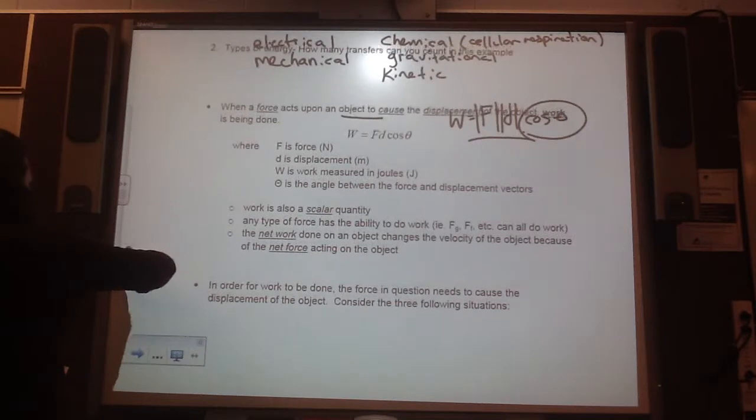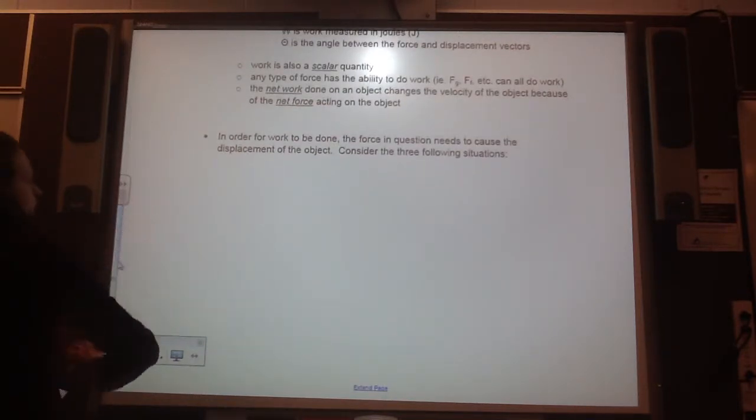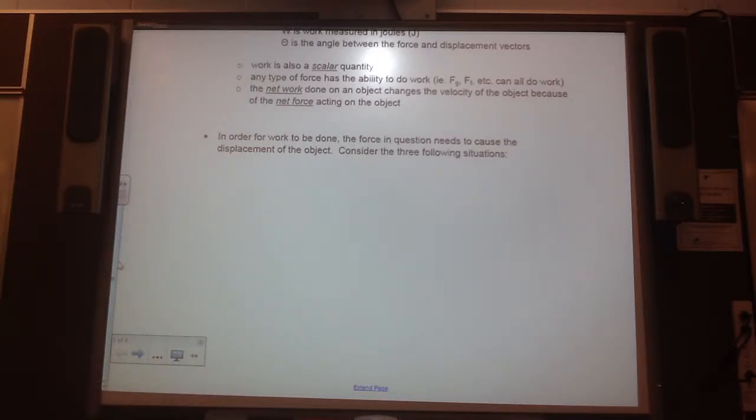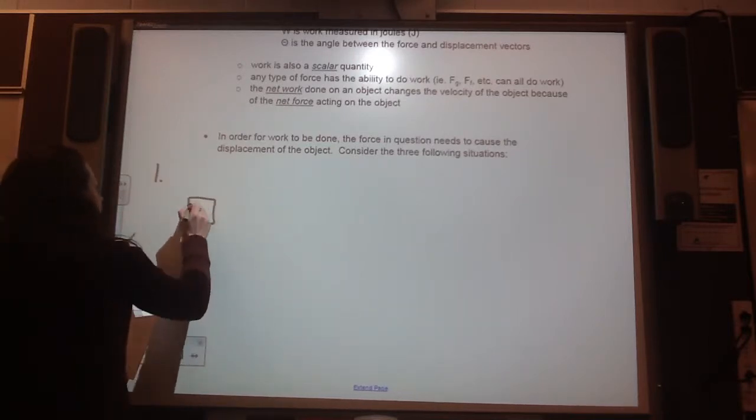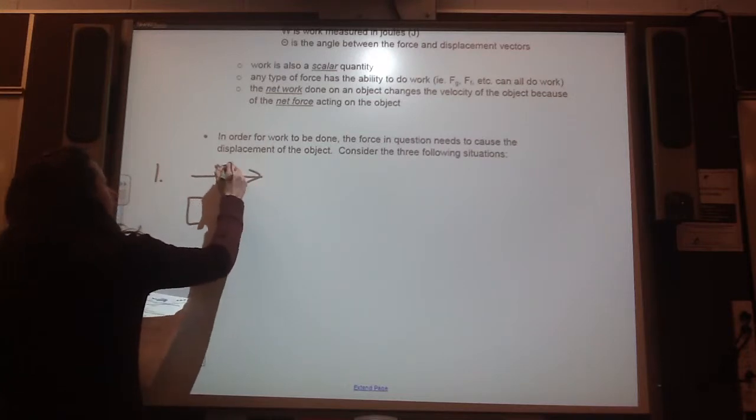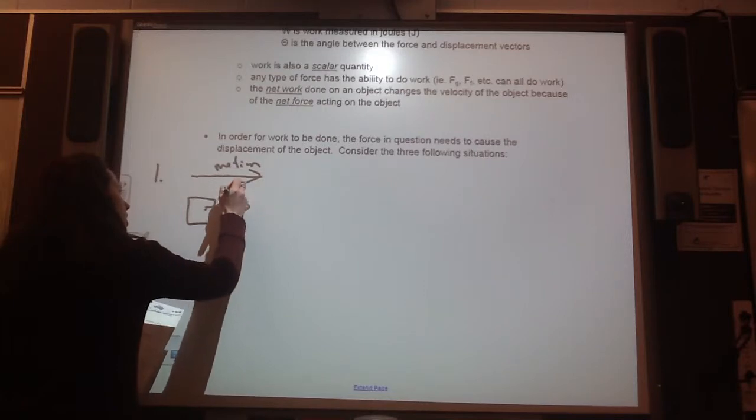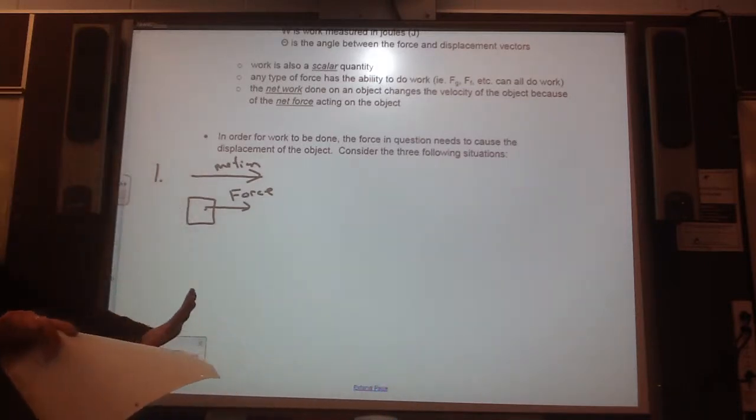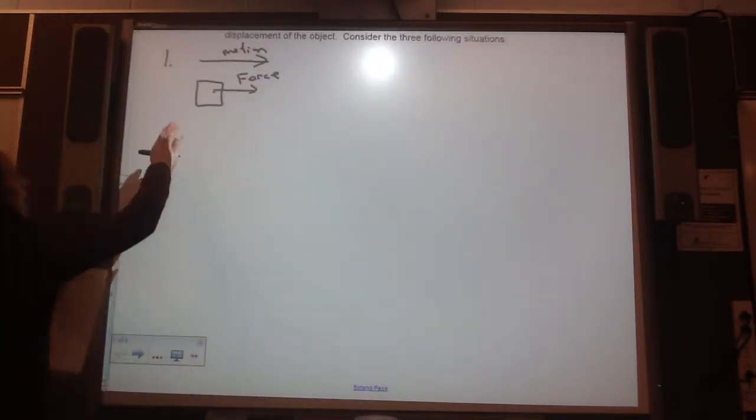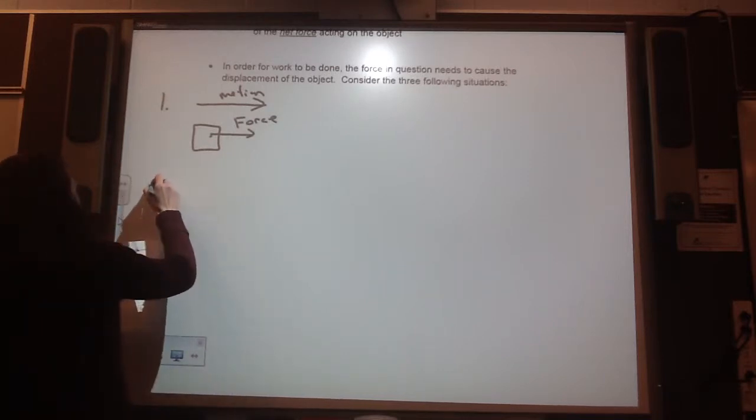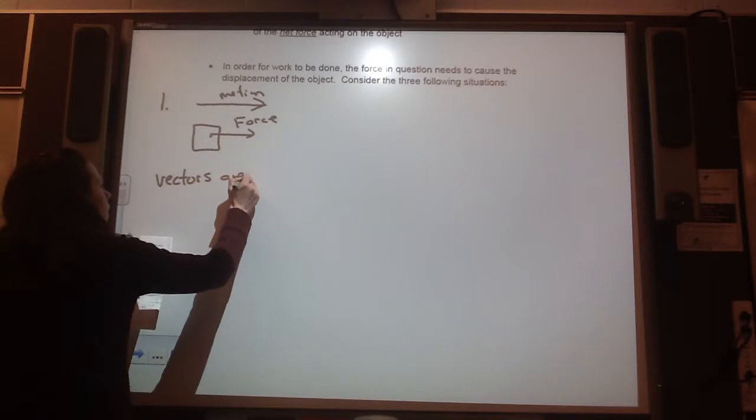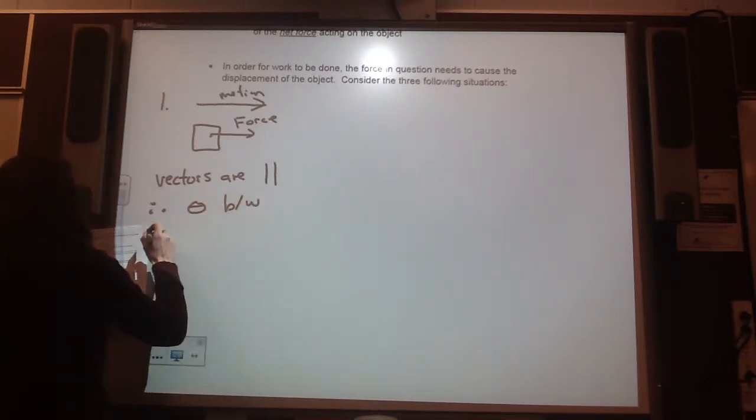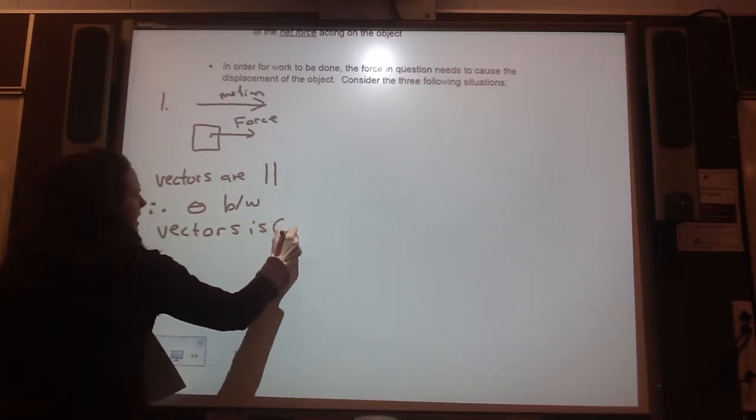So in order for work to be done, the force in question needs to cause the displacement of the object. So consider the three different situations that I'm going to propose to you now. So number one. Let's say I have a box, and the box is going to be moving this way, to the right. And my force is exerted in the same direction of motion. So it's like I'm pushing a box, and so the motion is going in the direction of my force. So in this instant, these two vectors are parallel. So let's write that up. So vectors are parallel. Therefore, theta between vectors is zero degrees.